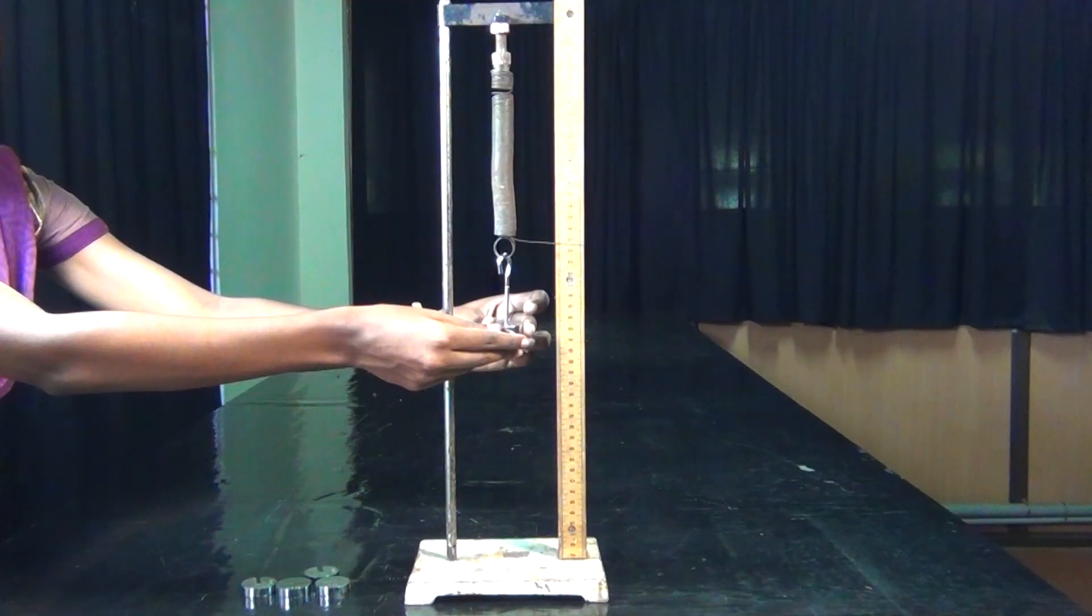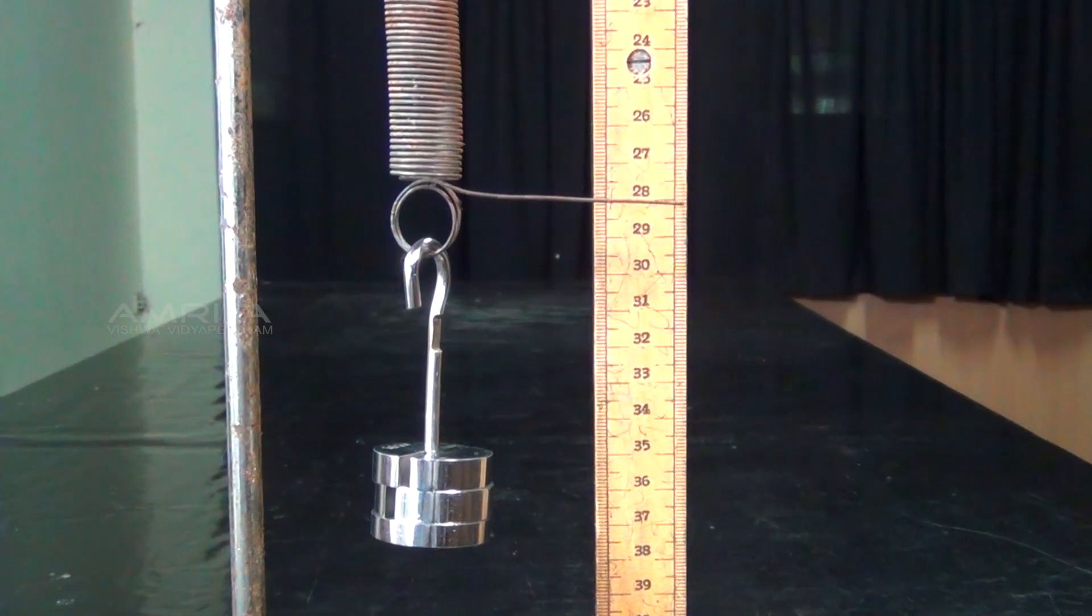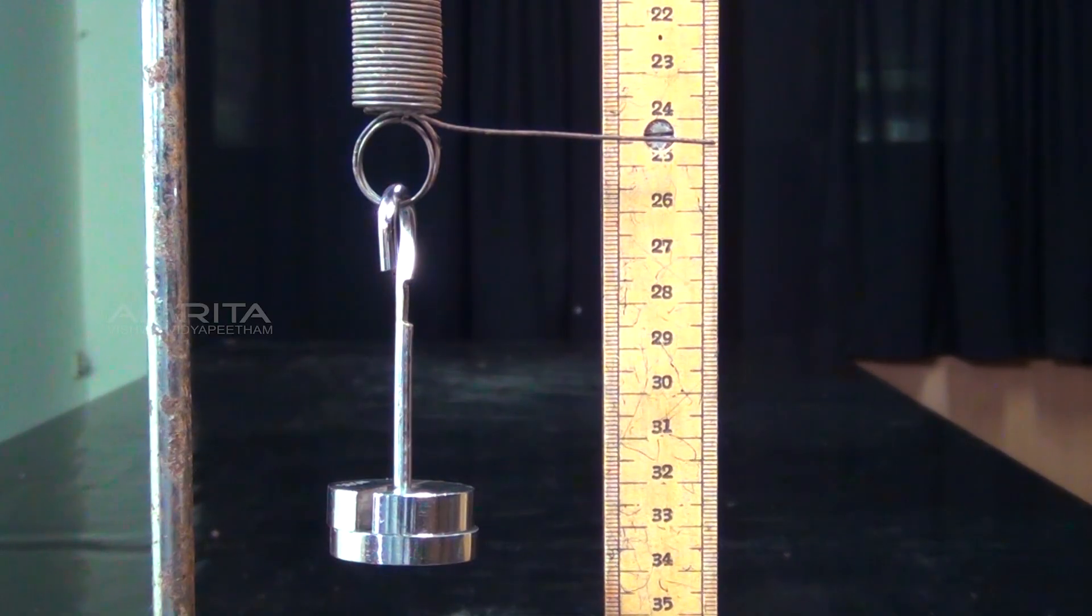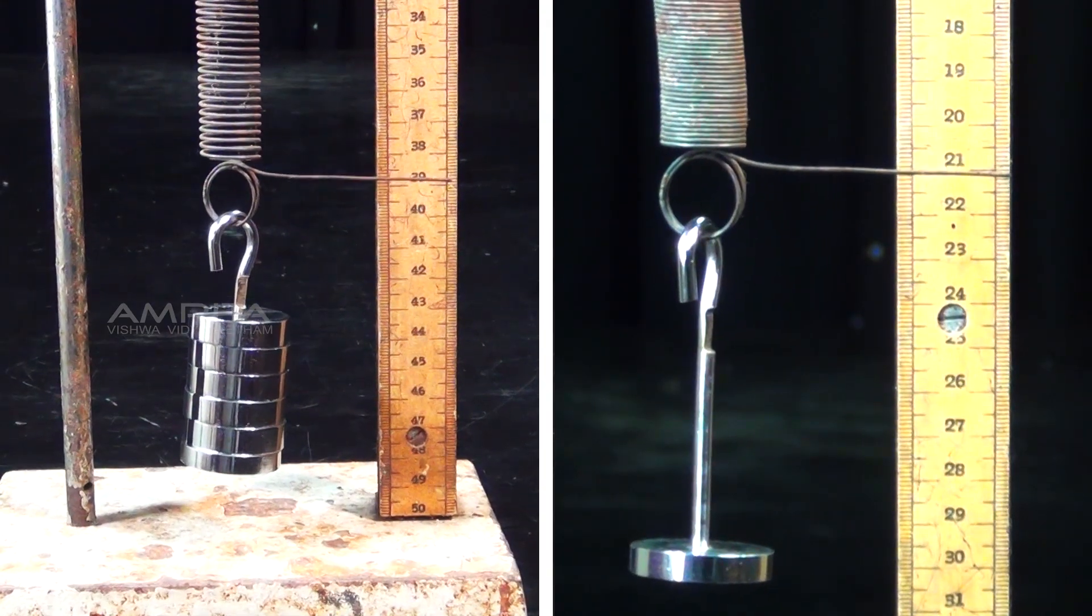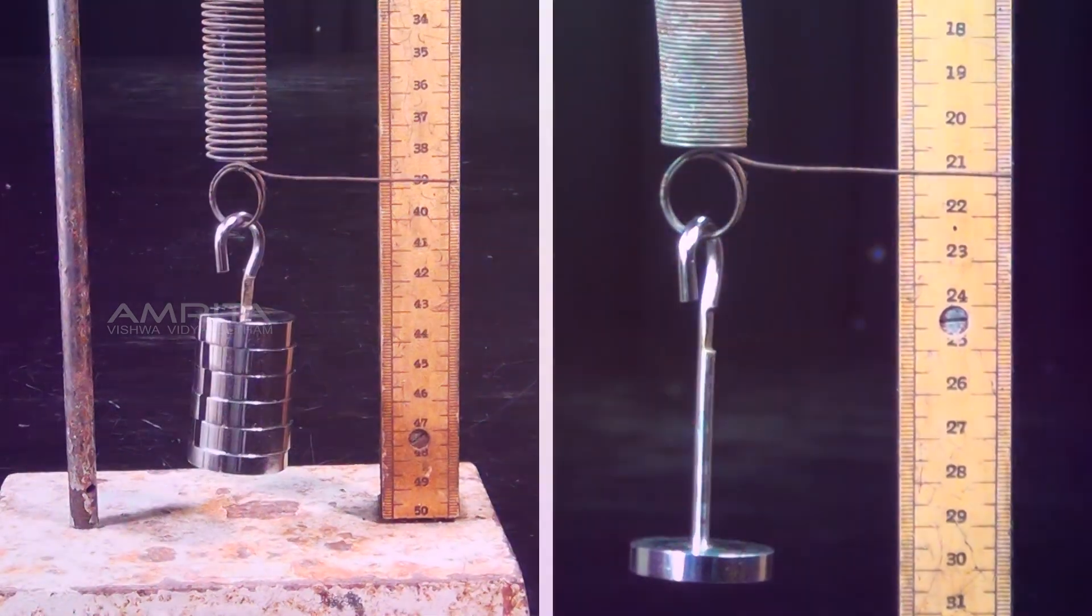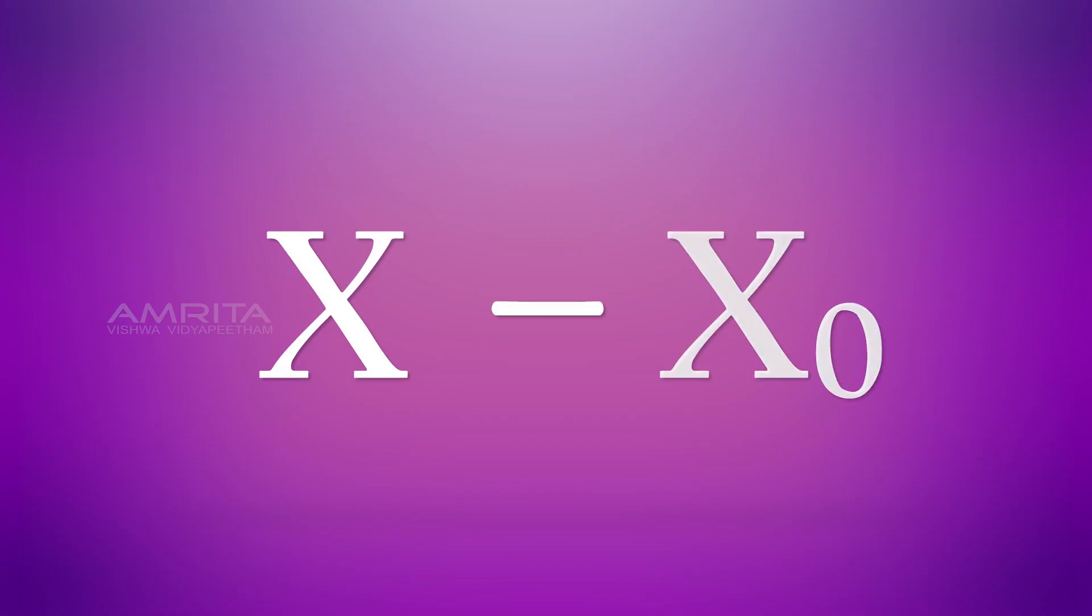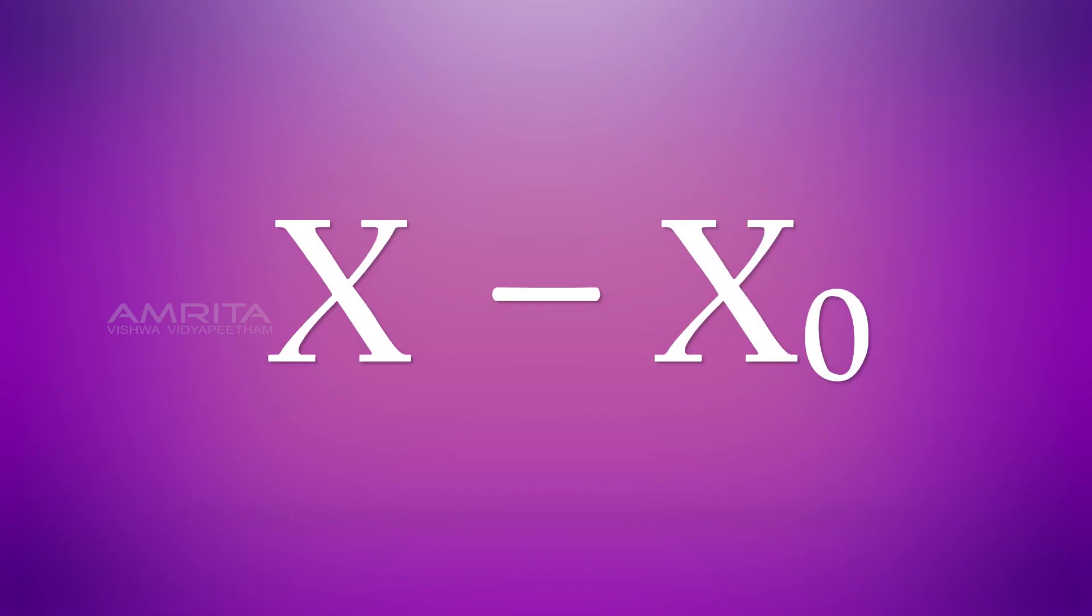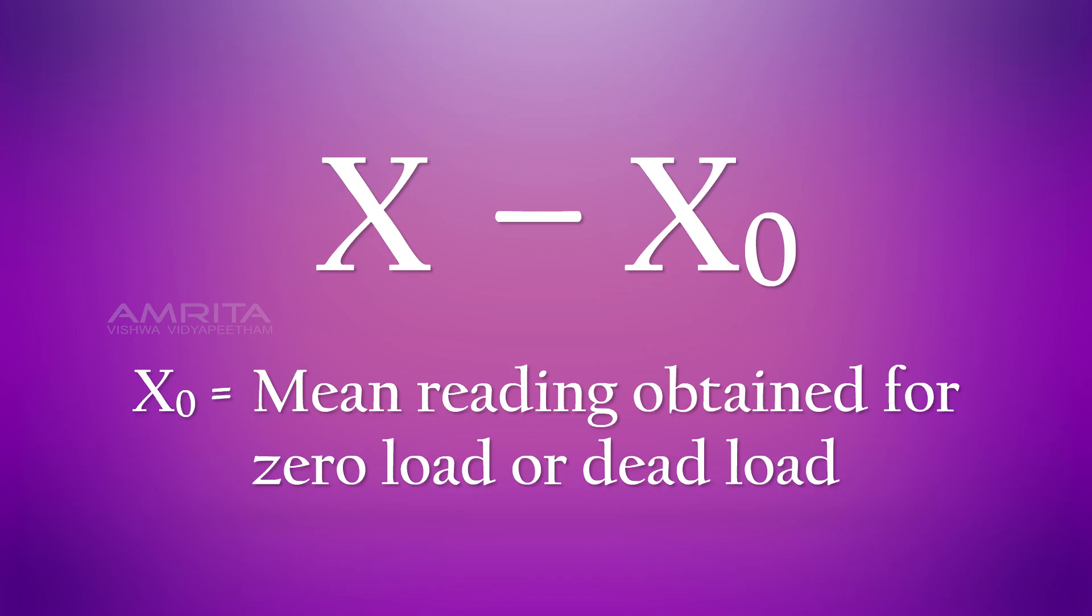The mean of readings x corresponding to loading and unloading for each load m is calculated and the corresponding extension L is determined by finding x minus x0, where x0 is the mean reading obtained from zero load or dead load.